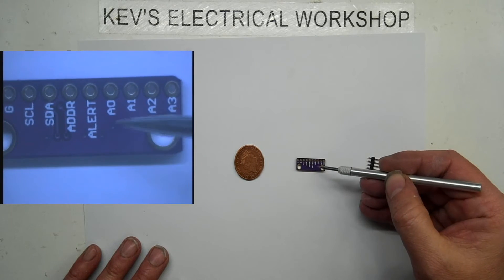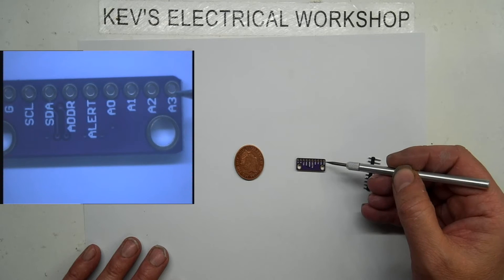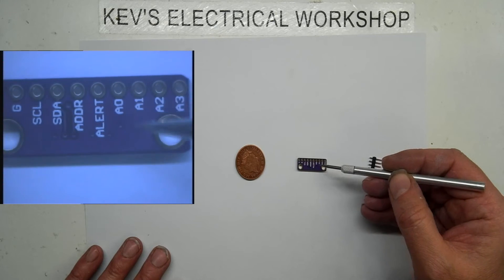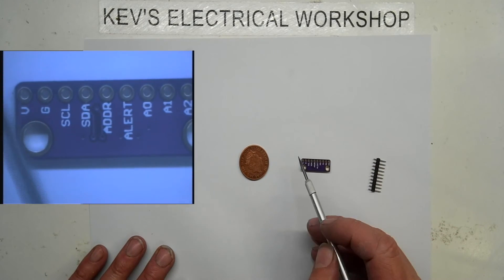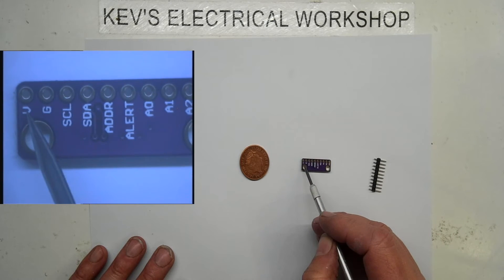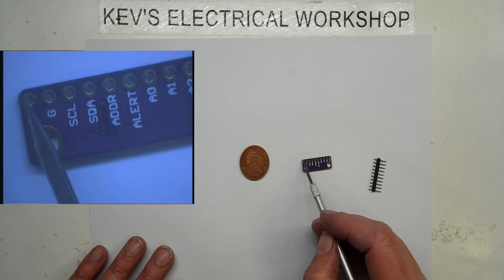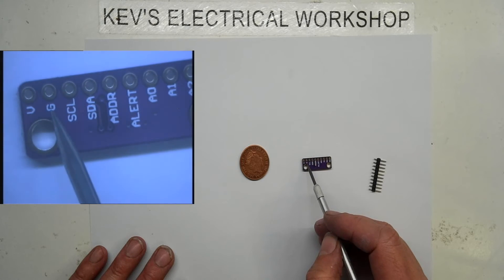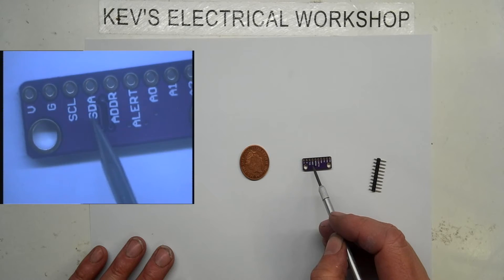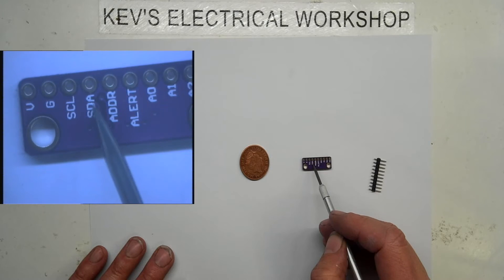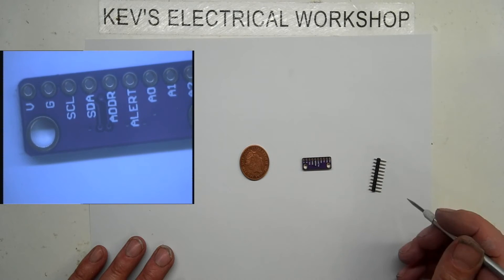I'm presuming A0 to A3 is our four input channels. We got V and G, maybe that's VCC, that's ground. These are SCL, SDA, and that's our comms line which we'll use. It's a two-wire I2C.